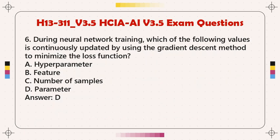Question 6: During neural network training, which of the following values is continuously updated by using the gradient descent method to minimize the loss function? A. Hyperparameter. B. Feature. C. Number of samples. D. Parameter. Answer: D.